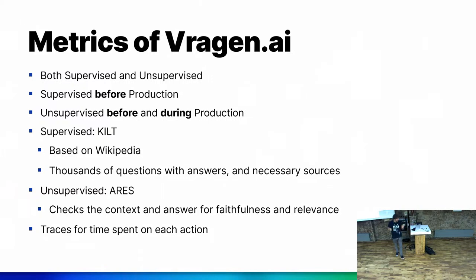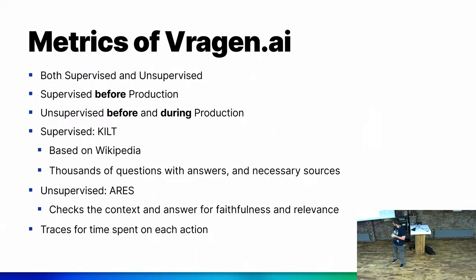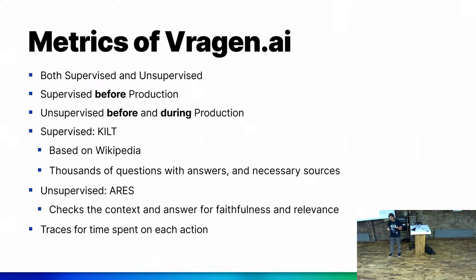How do we measure and evaluate this? We use both supervised and unsupervised evaluations. We use supervised evaluations before we put a model into production — we test whether a model will perform well before anything else. Then when in production, we switch to unsupervised. Unsupervised evaluation is also done during initial testing just to make sure things work correctly. Our supervised dataset is the SQUAD dataset — based on Wikipedia, with hundreds of thousands of questions, documents, and human annotations indicating what the correct document and correct answer are.